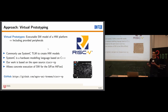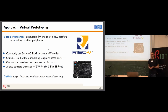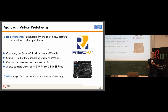SystemC TLM describes peripherals at a very high abstraction level based on a bus abstraction and how peripherals communicate over that bus. It is based on the C++ programming language — essentially a class library for C++ that extends it with facilities for modeling hardware. This concept is widely used in academia and industry. We leverage an existing virtual prototype for the RISC-V architecture called RISC-VP, which offers an executable software model for a variety of RISC-V based hardware platforms.